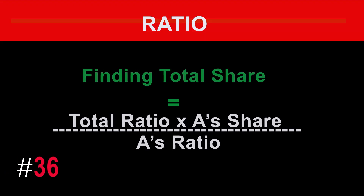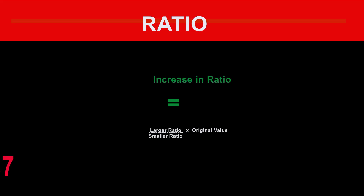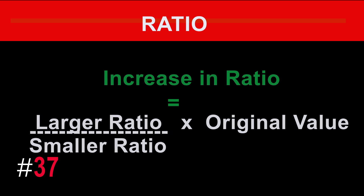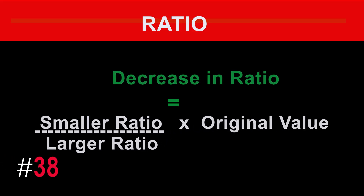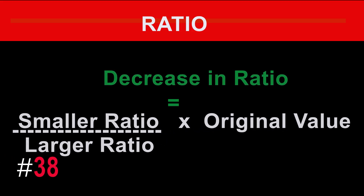Finding total share equals total ratio times A's share divided by A's ratio. Increase in ratio equals larger ratio divided by smaller ratio, times original value. Decrease in ratio equals smaller ratio divided by larger ratio, times original value.